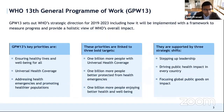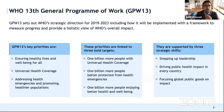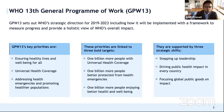WHO has a five-year general program of work. We are in the 13th general program of work, GPW-13, covering 2019 to 2023. A key aspect of GPW-13 is that we want to have measurable impacts on the health of people and be able to report in 2023 what specific impacts WHO and our 194 member states had. WHO's mission to promote health, keep the world safe, and serve the vulnerable is linked to three bold targets: one billion more people with universal health coverage, one billion more people better protected from health emergencies, and one billion more people enjoying better health and well-being.